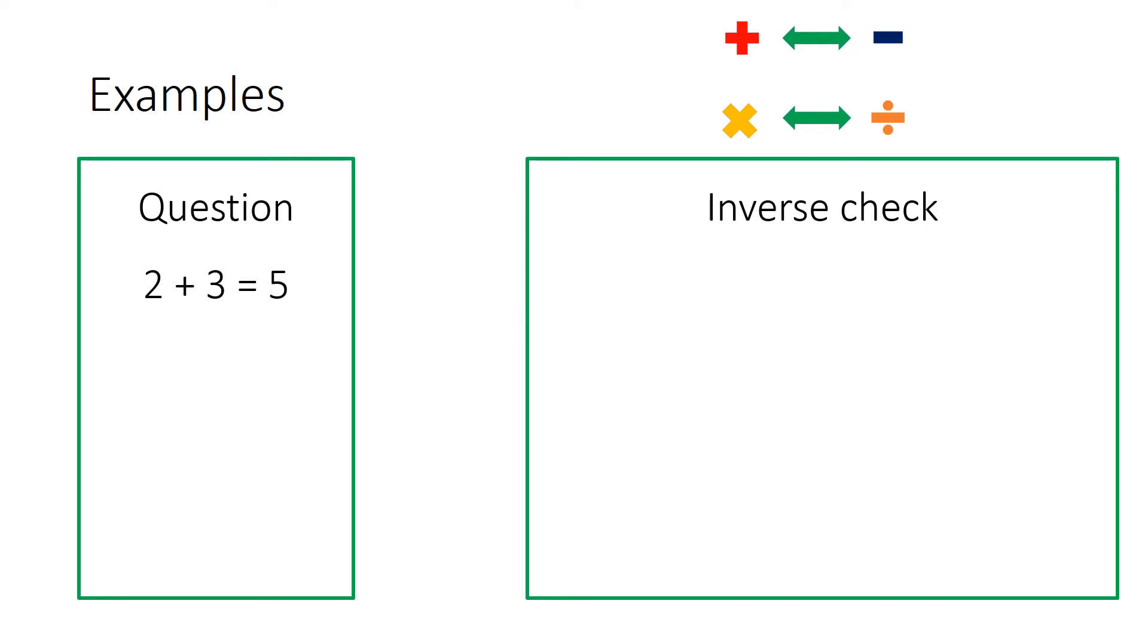So we all know that 2 plus 3 equals 5. We don't really need to check it but I'm going to use it for an example. So the opposite of add is subtract. So to check this sum we could do 5 take away 3 equals 2 or we could do 5 take away 2 equals 3. Always start with the answer and work back. So we've started with 5 because that's the answer.